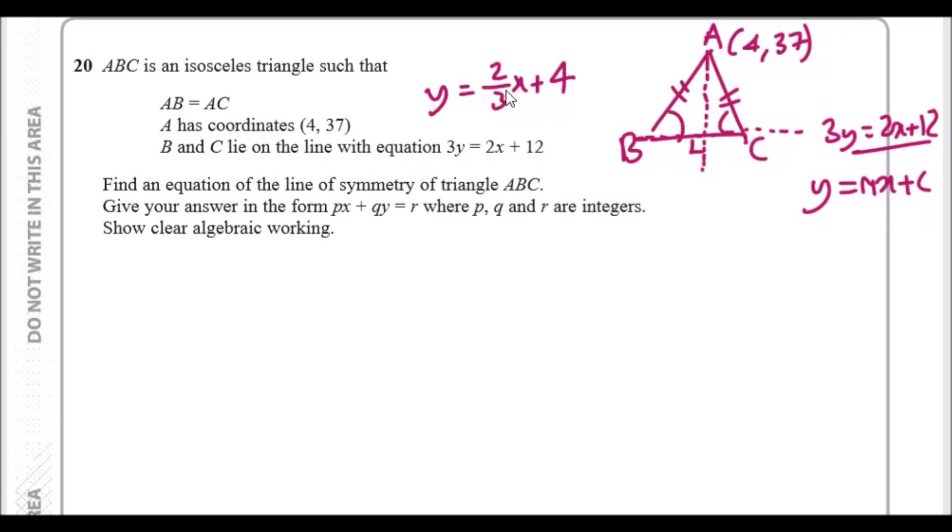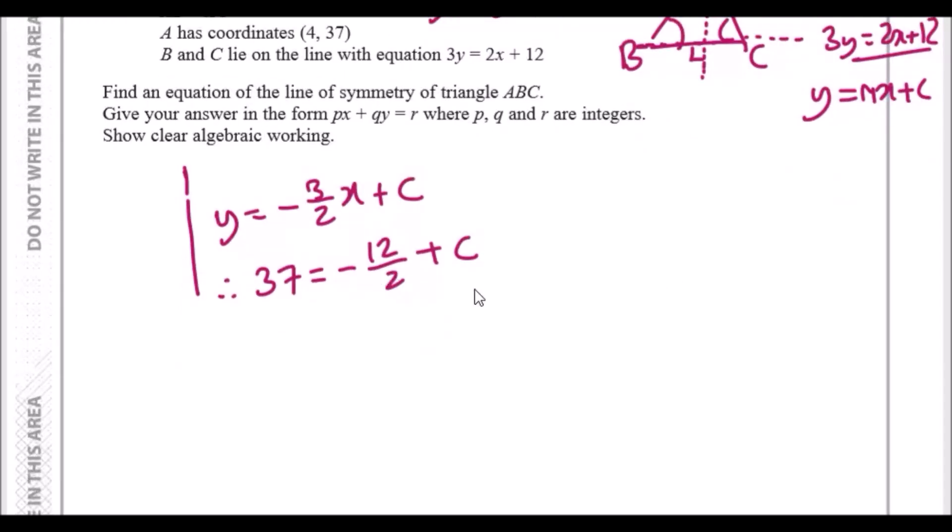We're actually almost there, we've just got to find c. But it's easy now because we know that the coordinate (4, 37) is on that line, we just plug in x is 4 and y is 37. So when y is 37 and x is 4, it'd be 4 times -3/2, which is -12/2 plus c. -12/2 is -6 plus c. The purpose is to find the c value. We just add 6 across, which is going to give us 43.